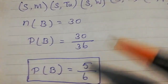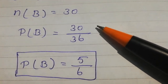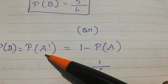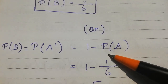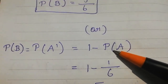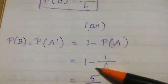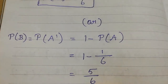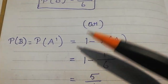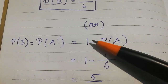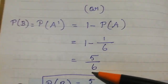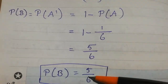An easier method for different days: P(B) is the complement of P(A), so P(B) = 1 minus P(A) = 1 minus 1/6 = 5/6. This complementary method is simpler. Therefore P(B) = 5/6.